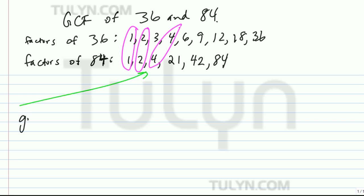Let's go ahead and write that down. Greatest common factor of 36 and 84, that's 4.